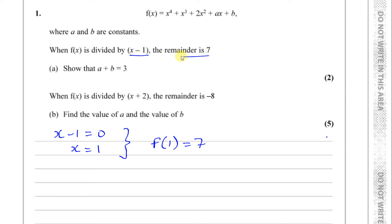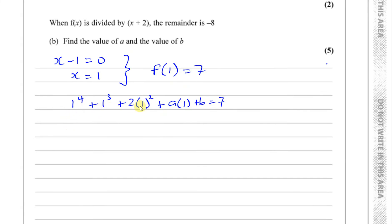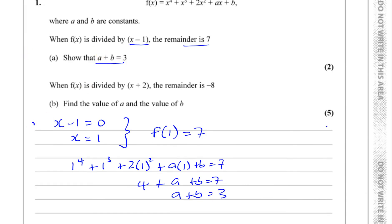If x minus 1 were a factor, the remainder would be 0 — that's called the factor theorem. Now substituting x equals 1: 1 to the power of 4, plus 1 to the power of 3, plus 2 times 1 squared, plus a times 1, plus b equals 7. Simplifying: 1 plus 1 plus 2 gives 4, so 4 plus a plus b equals 7. Subtracting 4 from both sides gives a plus b equals 3. That's exactly what we had to show, so part (a) is done.